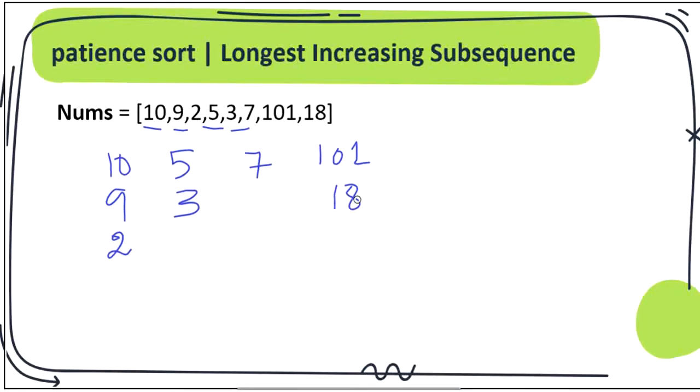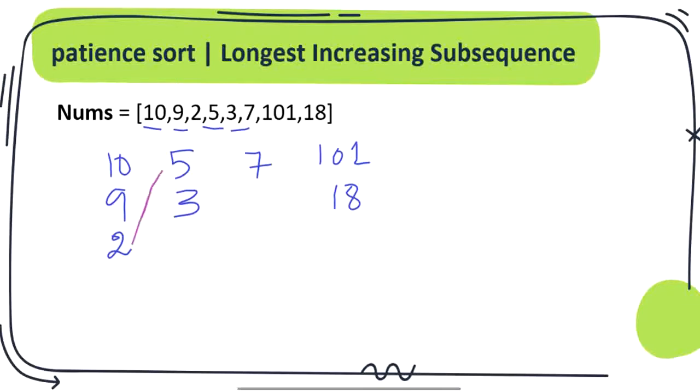Now that we have arranged our numbers in the form of piles, each layer will have a pointer to its adjacent layer with the top element when it was actually placed in the pile. For example when 5 was placed 2 was the top element. When 3 was placed 2 was the top element again. When 7 was placed 3 was the top element and when 101 was placed 7 was the top element and when 18 was placed 7 again was the top element. So if you follow the connection you will get two longest increasing subsequences which is 2, 3, 7, 101 and 2, 3, 7, 18. Both are said to be the longest increasing subsequence and we can return any of them as our output.